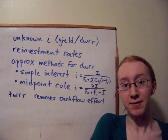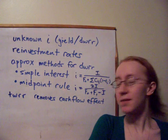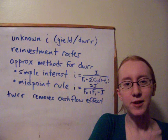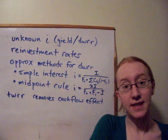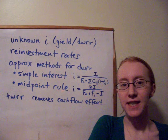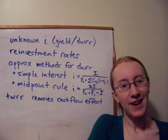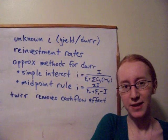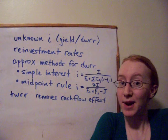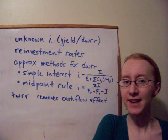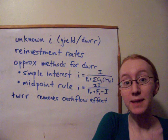We can make a further simplifying assumption, and that gives us the midpoint rule, and that's where we assume not only are all the cash flows earning simple interest, but all the cash flows are occurring exactly halfway through the year. Obviously this is going to introduce a little bit more inaccuracy, because the cash flows might not be occurring exactly halfway through the year, but if we do this, the formula simplifies even further.